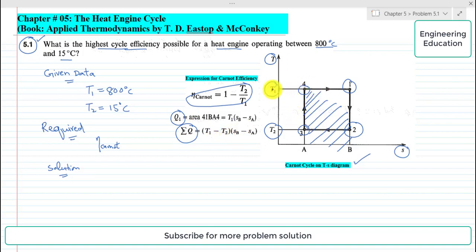Here, SB minus SA, so if we multiply this side with this side we will get the area of this square, for example. So this is the net heat of the cycle.